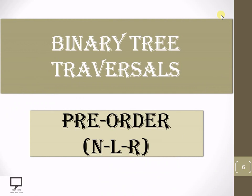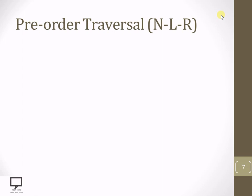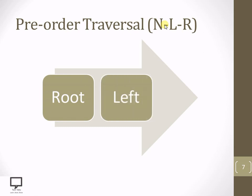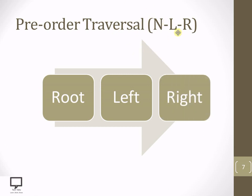In this current video session, I am focusing on binary tree traversals, mainly on pre-order. Pre-order is nothing but root node, left, and right — that is the sequence we follow for pre-order traversal. I am reminding you the sequence we are supposed to follow to traverse any tree in pre-order: we start with the root node, then we go to the left subtree or left child, and after that we move to the right subtree or right child.